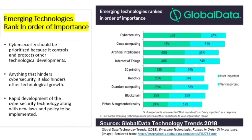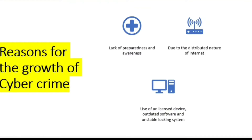Moreover, cyber security is important to other technological developments because it not only secures other technological devices but also protects their privacy and prevents data loss and data breaches. What are the reasons for the growth of cybercrime? The major three are: lack of preparedness and awareness due to the distributed nature of the internet, use of online systems with unlicensed devices and outdated software, and unstable logging systems.